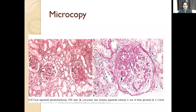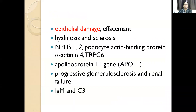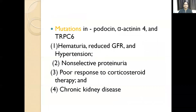Here we can see the affected part of the glomerulus and the hyalinosis. Before going to the collapsing type: in FSGS clinical features there is hematuria, reduced GFR, and hypertension. In minimal change disease, there is no hypertension or hematuria.